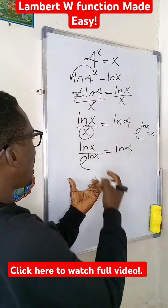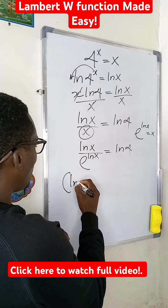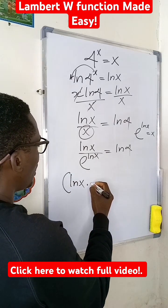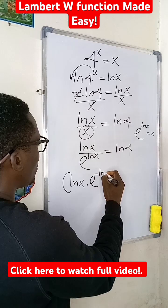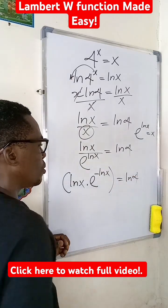Now, having seen this, I can still simplify this to give me the ln of x. Multiply by e to the power of negative ln of x, and this will be equal to ln of 4. Good.